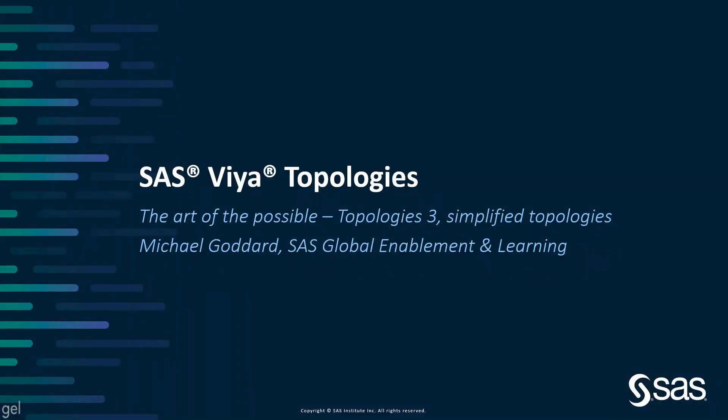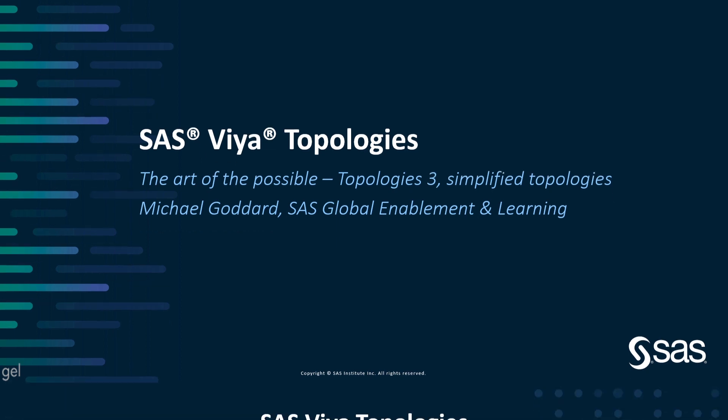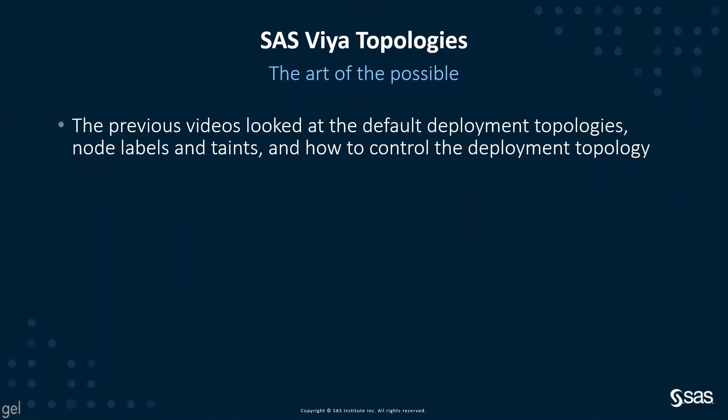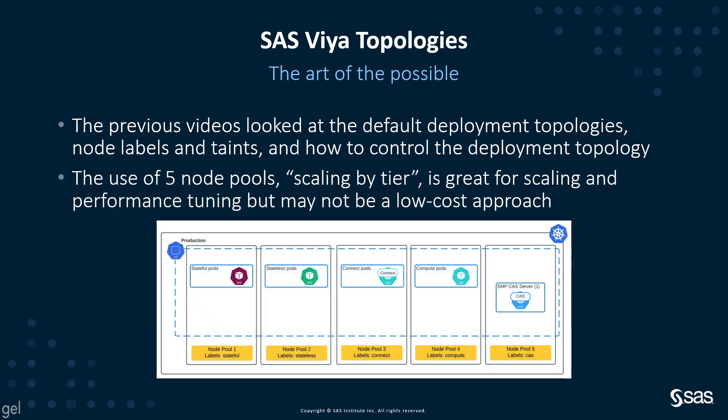This video will look at SAS Viya topologies. The previous videos in this series looked at the default deployment topologies using node labels and taints, and how to control the deployment topology. We looked at the use of the five node pools, the default node pools, and we discussed something called scaling by tier.